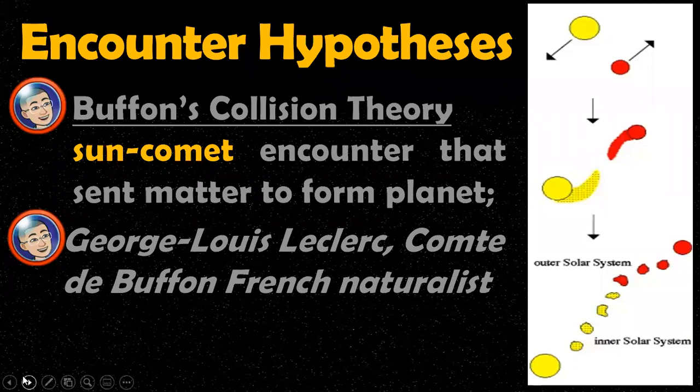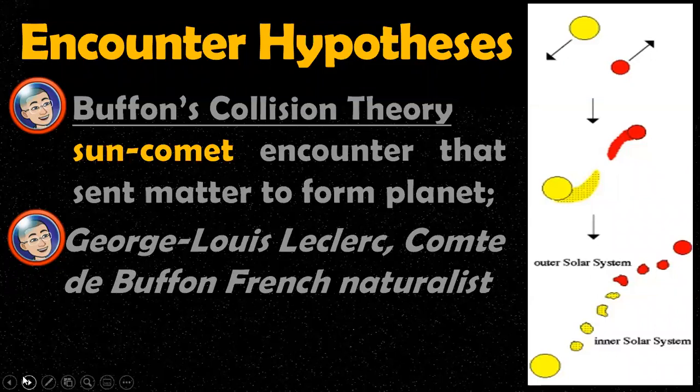Now let's discuss the different hypotheses and theories about the solar system. First, we have the encounter hypothesis. Under the encounter hypothesis, we have two different theories. We call it the encounter hypothesis because our solar system was a result of the meetup of the sun and a passing star.